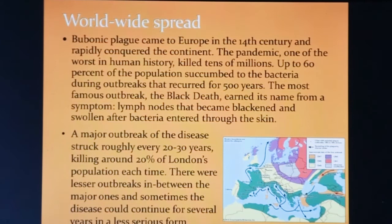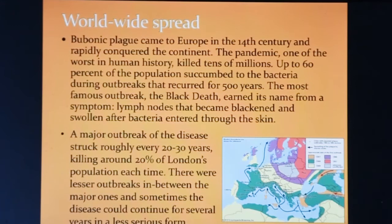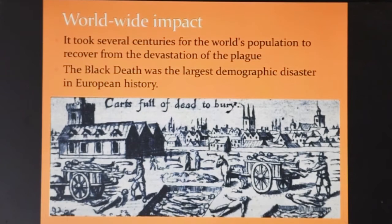You're probably familiar with the impact of plagues in medieval Europe. The bubonic plague, sometimes referred to as the Black Death, killed up to 60% of the population. A major outbreak of that disease reoccurred roughly every 20 to 30 years with minor outbreaks in between. It took centuries for the world's population to recover from the plague's devastation. It was the largest demographic disaster in European history.